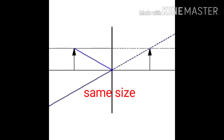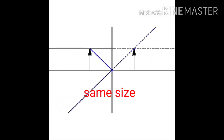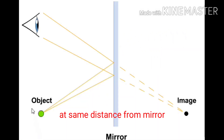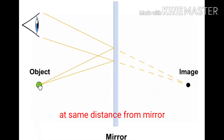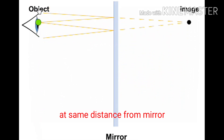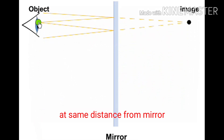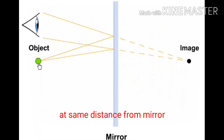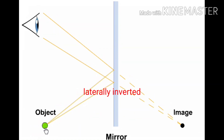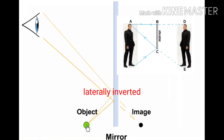The size of image is equal to that of the object. The image formed is as far behind the mirror as the object is in front of it. Further, the image is laterally inverted.